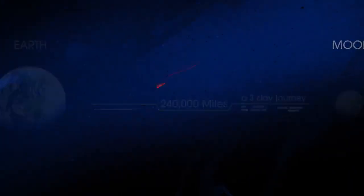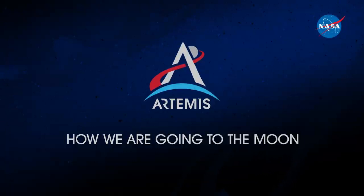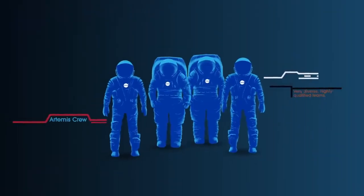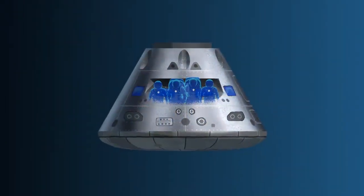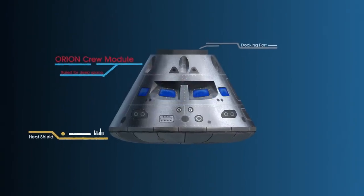So, what will an Artemis mission look like? Everything is designed and tested with our most important element in mind, the astronauts. This is their deep-space, human-rated spacecraft called Orion, built in three parts.